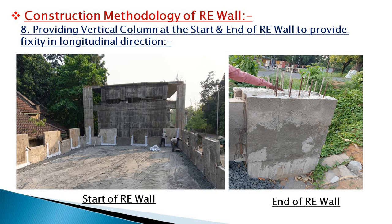We provide the geogrid to fix the RE panel in the transverse direction. Additionally, we provide a vertical column at the start of the RE panel and at the end of the RE wall to provide fixity in the longitudinal direction. By providing the vertical column at both ends, we fix the RE wall and provide fixity in the longitudinal direction. Thank you so much — if you like this video, please share and subscribe.